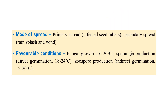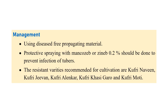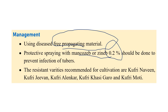The mode of spread: primary spread is through infected tubers, and secondary spread is through rain splash and wind. Favorable conditions: fungal growth requires 16–20°C, sporangial production requires 17°C, and zoospore production requires 12–20°C. For management: use copper fungicides, disease-free propagative material, spray Mancozeb or Zineb at 0.2%, and plant resistant varieties like Kufri Navin, Kufri GI, Kufri Alankar, Kufri Jhansi, Kufri Moti. 'Kufri' is the village near Shimla where the Indian Potato Research Institute is located.